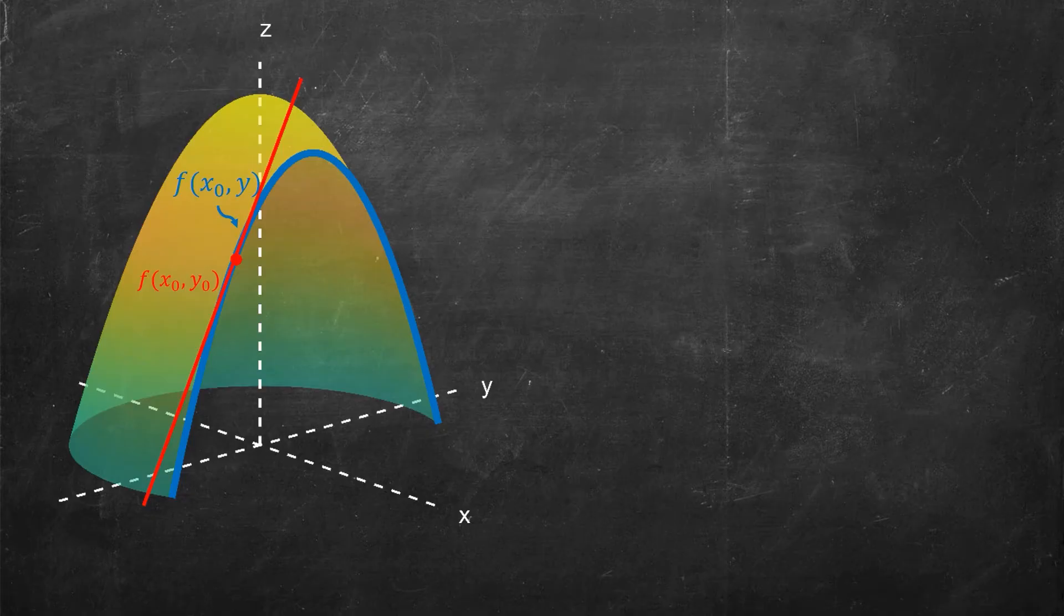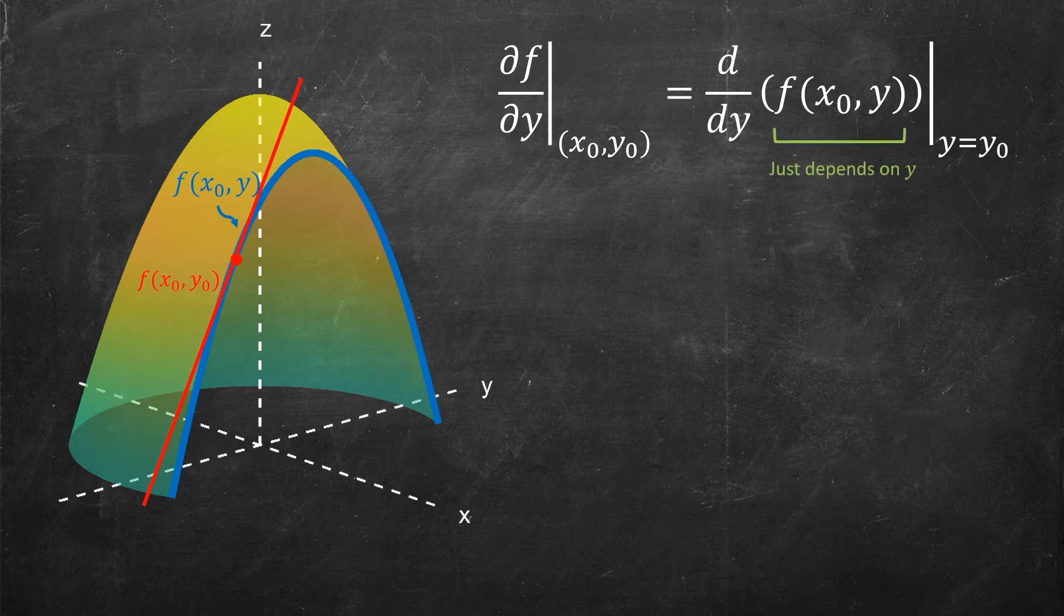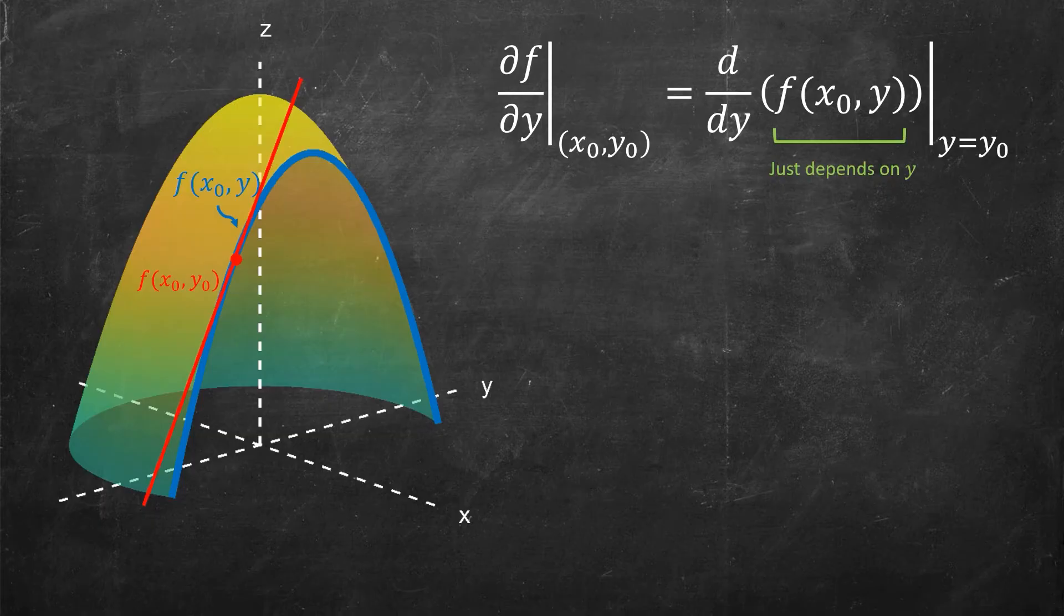Hence, I'm going to define my partial differentiation in the following way. I will say that the partial derivative of f with respect to y evaluated at the point x₀, y₀, that's what the long vertical bar means, is nothing but the single variable derivative d/dy of this function that only depends now on y, this function f(x₀, y). Then finally when you plug in the value of y equal to y₀, you've now figured out what is the slope in the y direction at this point x₀, y₀.